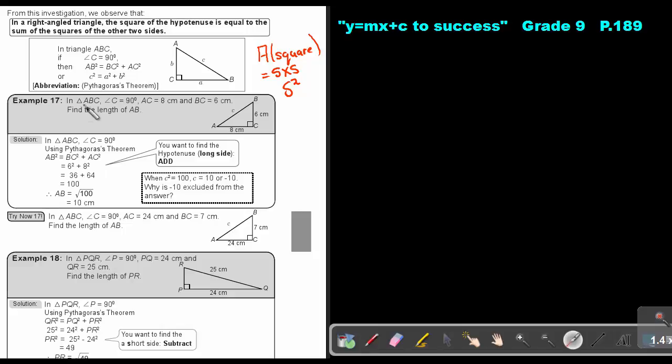Example 17. In triangle ABC, angle C is 90, AC is 8, BC is 6. Find the length of AB. They are looking for the long one. So if they are looking for the long one, it's always an addition. Using Pythagoras, you can say AB squared will be equal to BC squared plus AC squared. So it will be 6 squared plus 8 squared and that's 100.